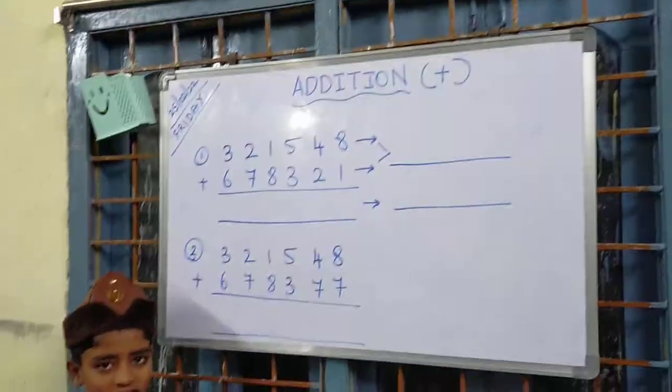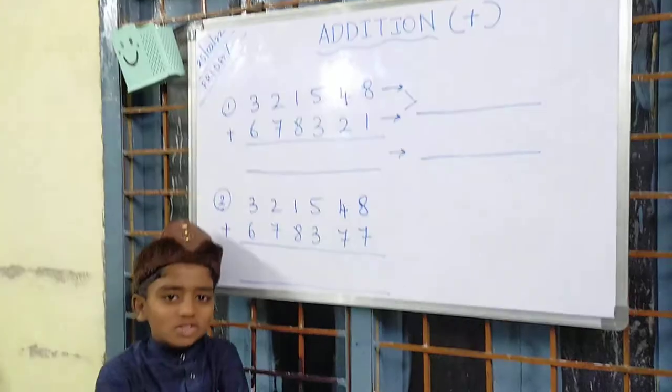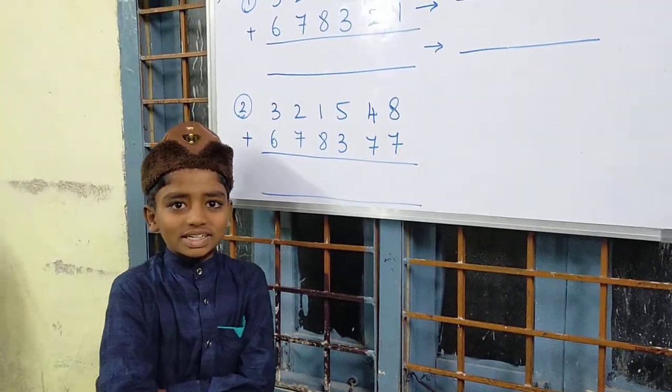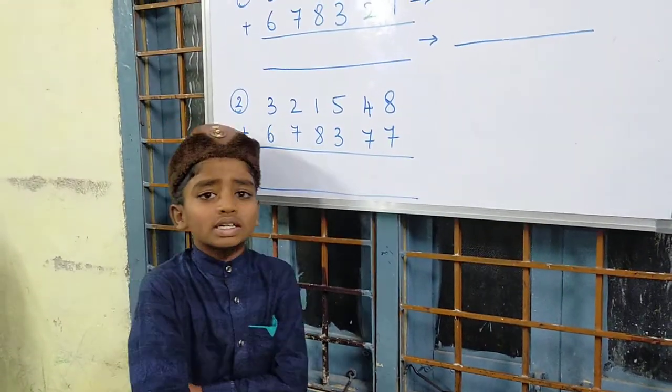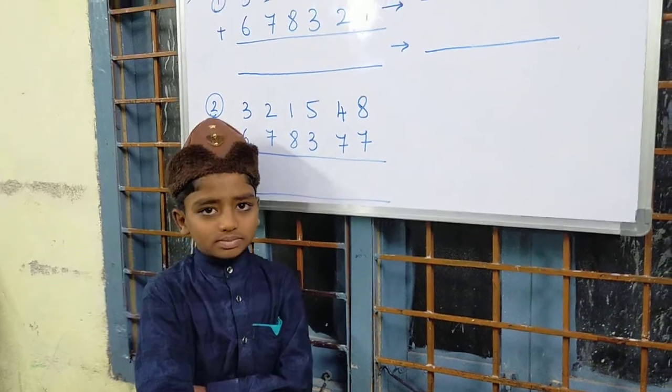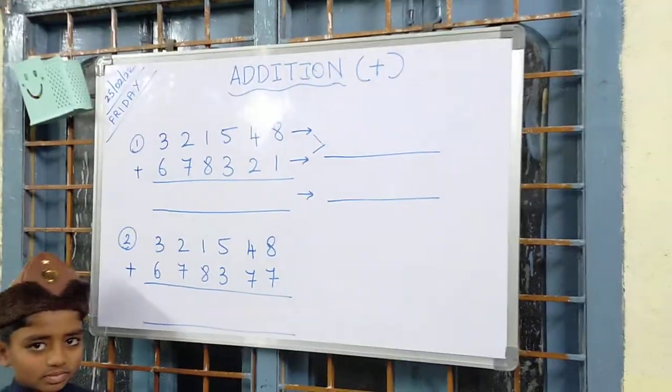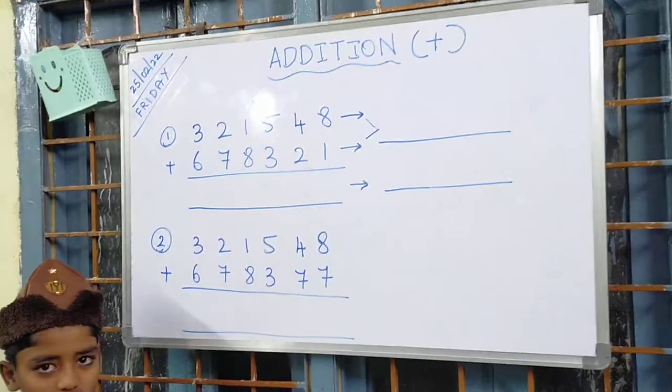First of all, tell me what do you mean by addition? Addition is the process of adding the numbers together. Very good. So addition is the process of adding the numbers together. What is the symbol of addition?